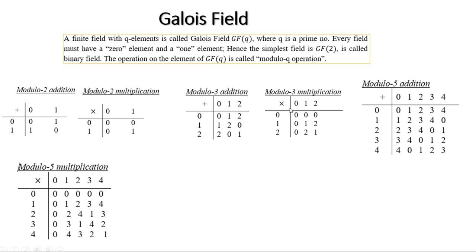For example, if you perform for GF of 5, 5 is another prime number after 3. 4 is the largest element, so it will not go beyond 4. For example, if you perform 4 plus 3, so 4 plus 3 is 2. If you count: 0, 1, 2, 3, 4, then 1, 0, 1, 1, 1, 2.